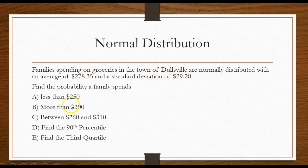Find the probability a family spends less than $250, more than $300, between $260 and $310. Find the 90th percentile. Find the third quartile.